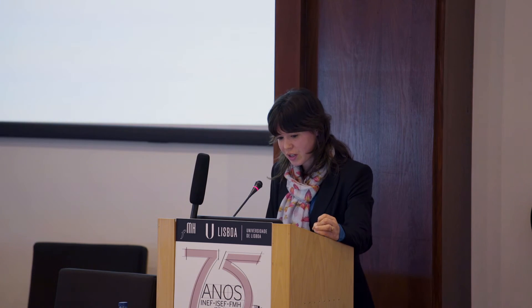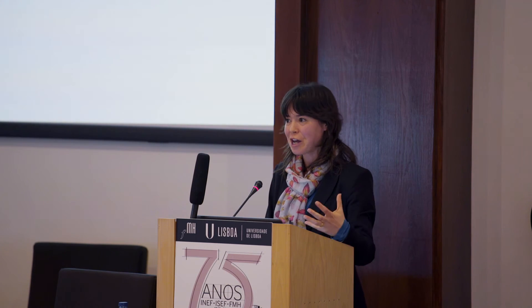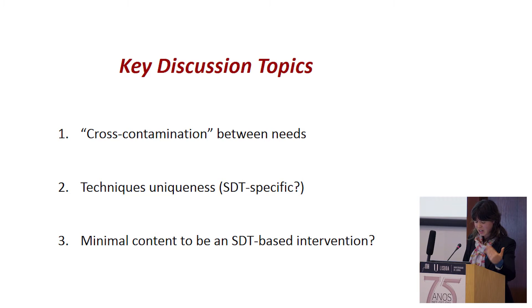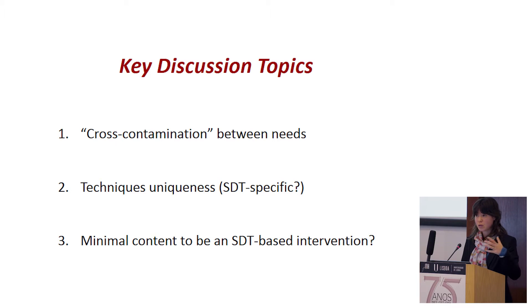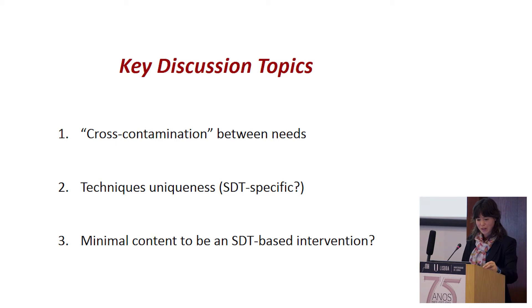I would like to share some of the issues and challenges we're facing while performing this interesting and challenging exercise. The first regards the cross-contamination that exists between needs: many techniques cross over into supporting multiple needs and are not exclusively supportive of only one. This is not a problem at all — it just highlights the synergy between needs proposed by SDT. It's difficult to imagine supporting autonomy or competence without also supporting relatedness, for instance, without taking into account people's goals, interests, and their current situation. Thus, this made us wonder if we should only consider need-supportive techniques as a whole, rather than SDT-specific techniques targeting each need separately.